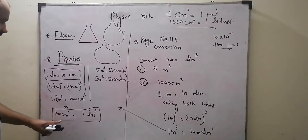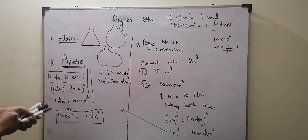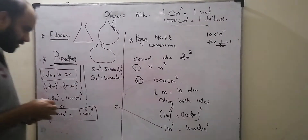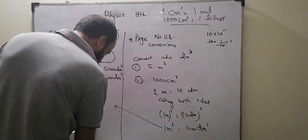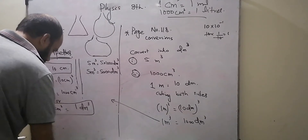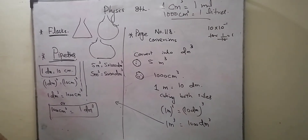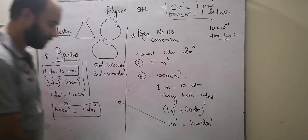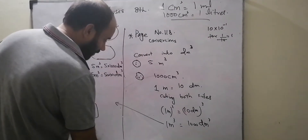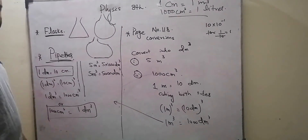So it is clear that 1 meter equals 10 decimetres. Today you need to be able to do this chapter. If you complete this exercise, I will cover you in the next section. We will attend the next lecture. Thank you so much.